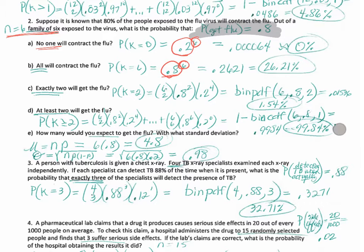B says all of them get the flu. So that's 0.8 to the sixth power — all of them get it. Now, this is a little iffy on the math because if six people go to church and are exposed to somebody who has the flu, what if they go home and the mom gets the flu? Then the others might not have got it from the first exposure, but then there's a chain. So what is this assuming is happening from person to person about the probability of getting the flu?